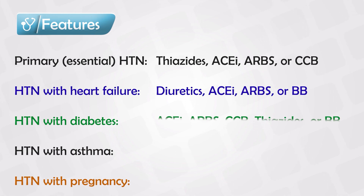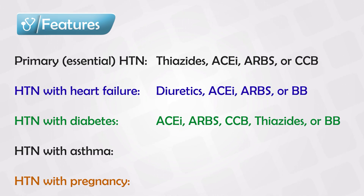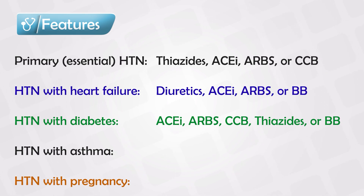If the patient has hypertension with diabetes, we can use medications that decrease blood pressure and also have favorable effects on the kidneys, such as ACE inhibitors and ARBs. Mainly ACE inhibitors protect the kidneys and decrease proteinuria. We can also use calcium channel blockers, thiazide diuretics, or beta blockers.